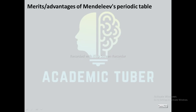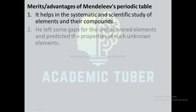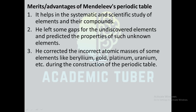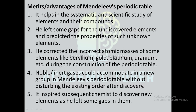Advantages of Mendeleev's periodic table: it helps in the systematic and scientific study of elements and their compounds. He left some gaps for the undiscovered elements and predicted the properties of such unknown elements. He corrected the incorrect atomic masses of some elements like beryllium, gold, platinum, and uranium during the construction of the periodic table. Noble or inert gases could be accommodated in a new group in Mendeleev's periodic table without disturbing the existing order after their discovery. It inspired subsequent chemists to discover new elements.